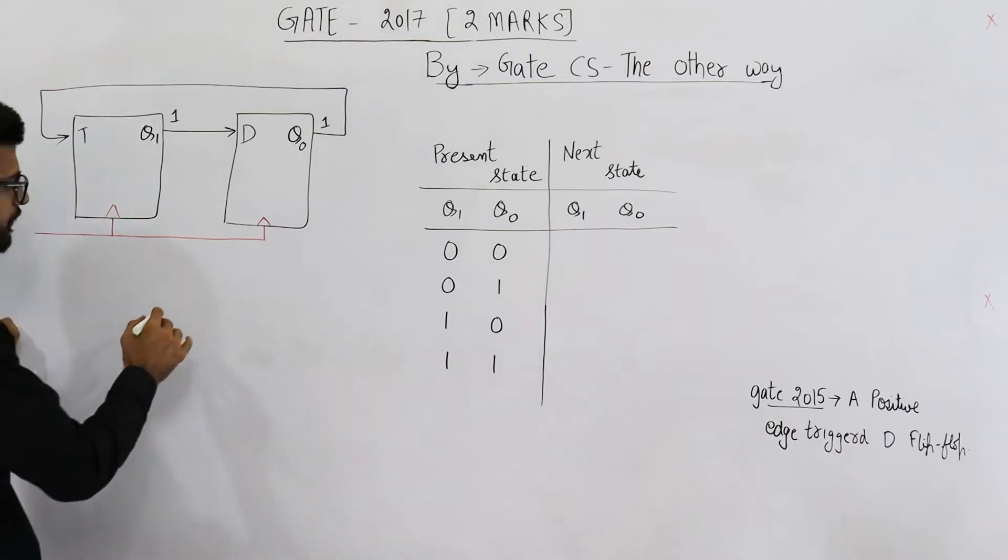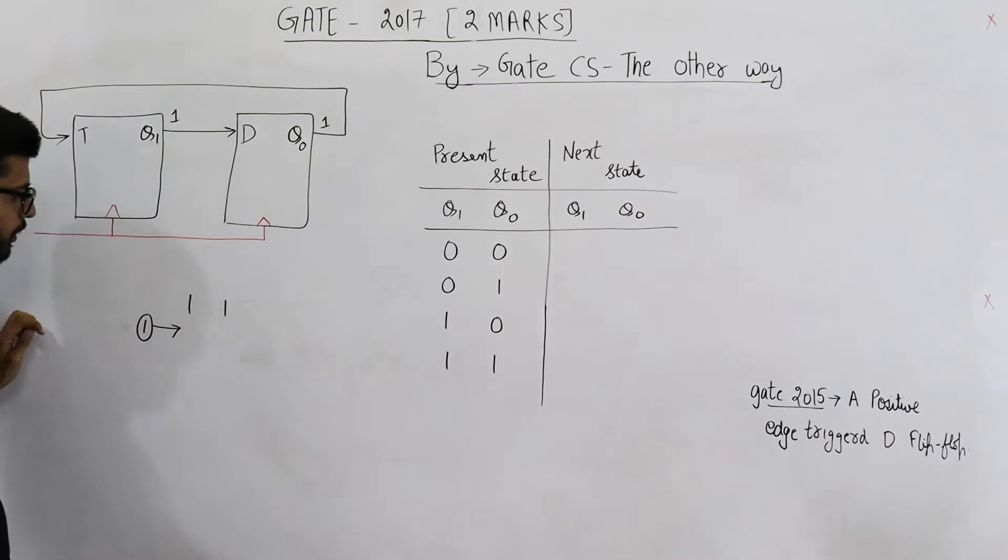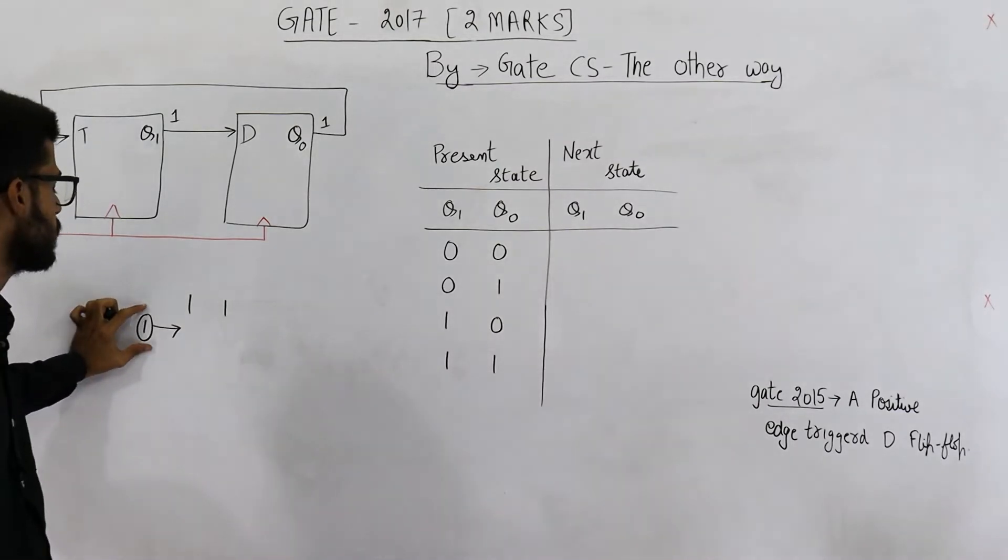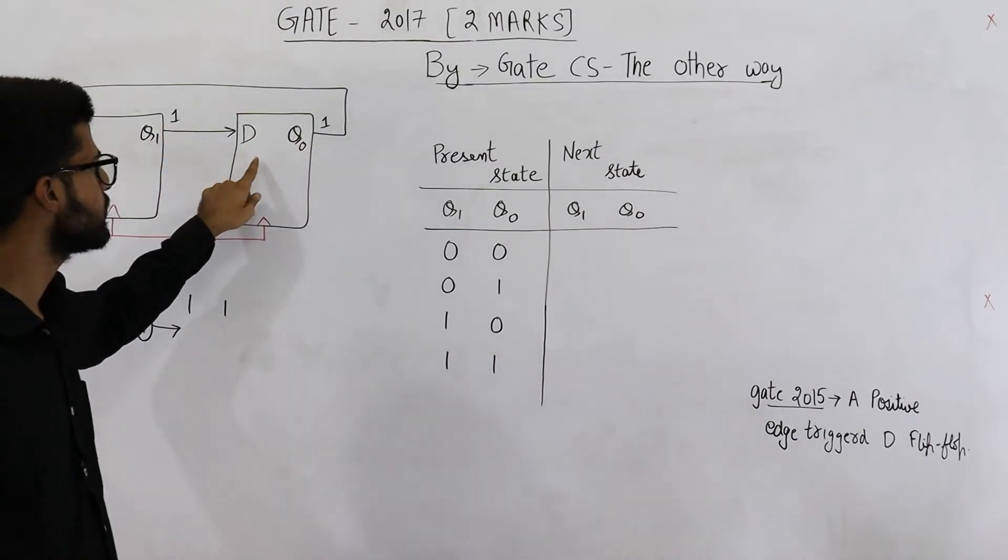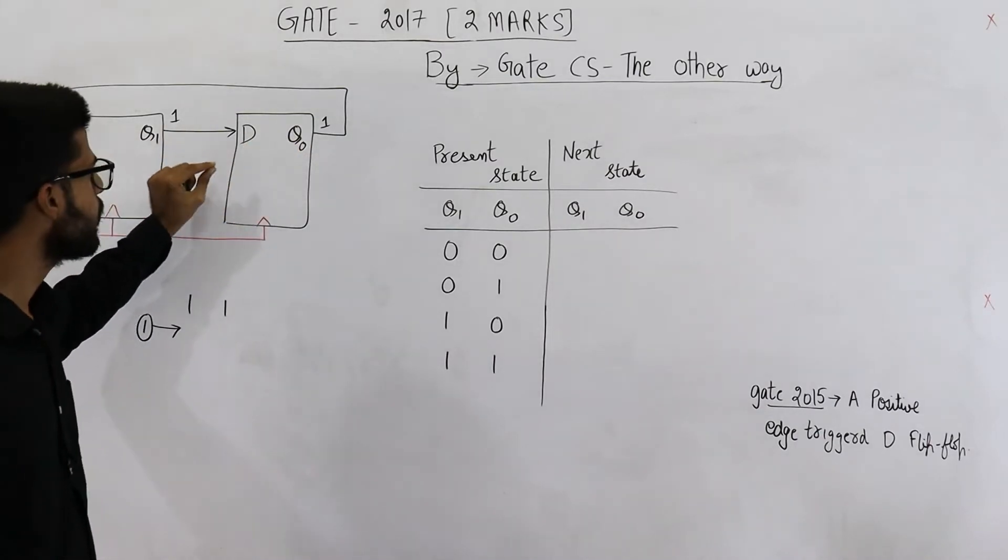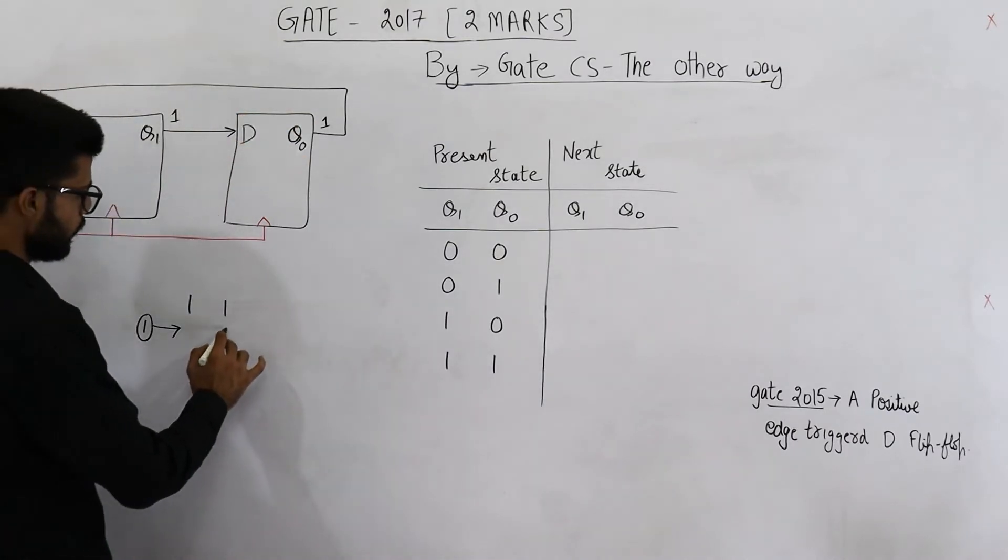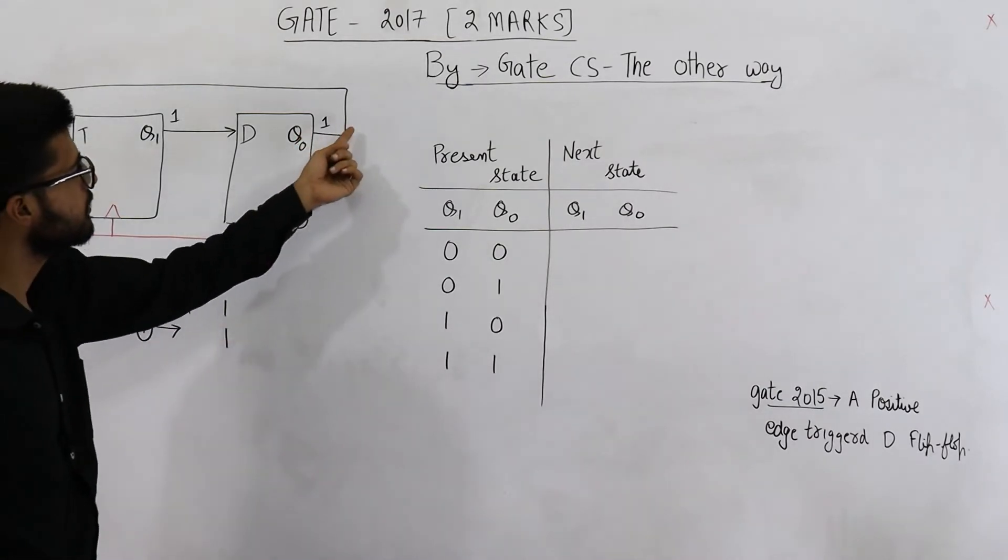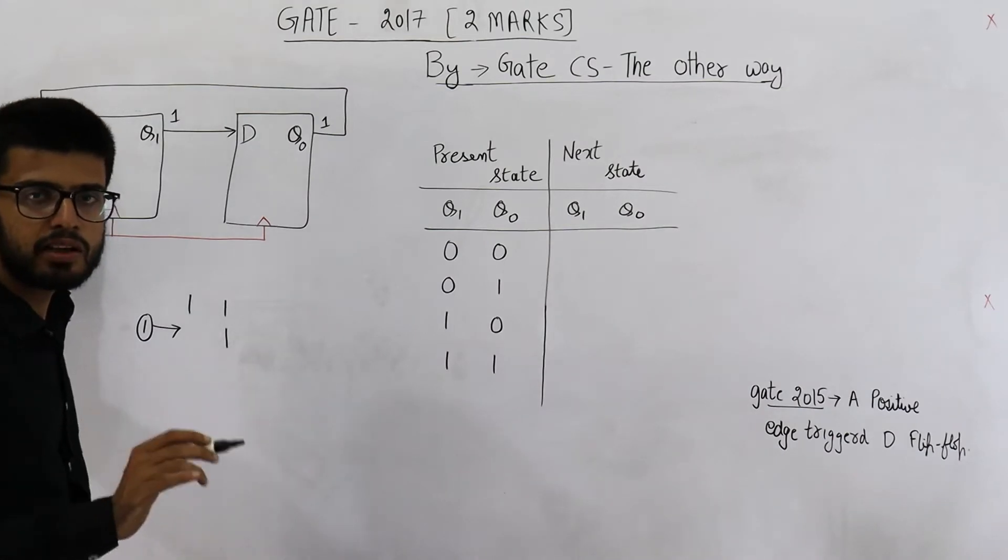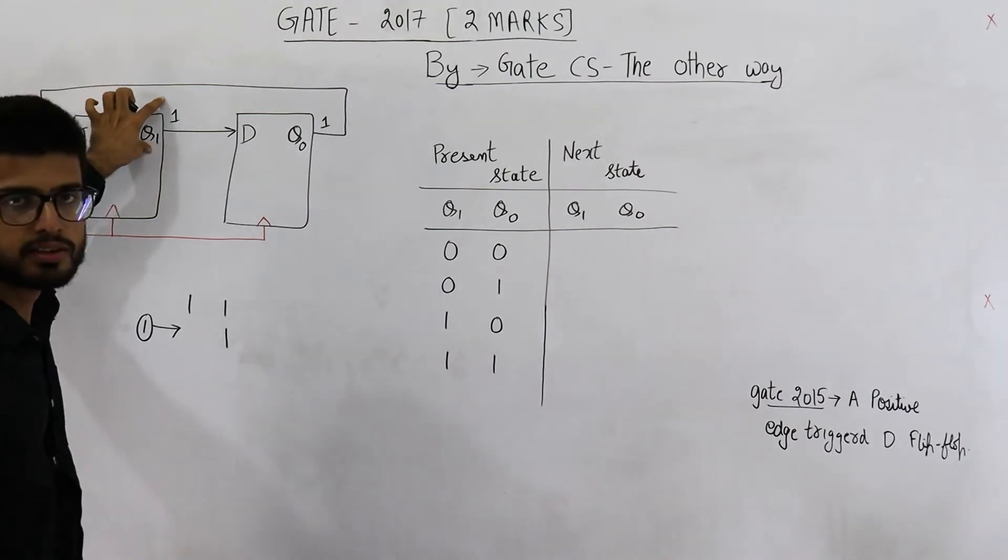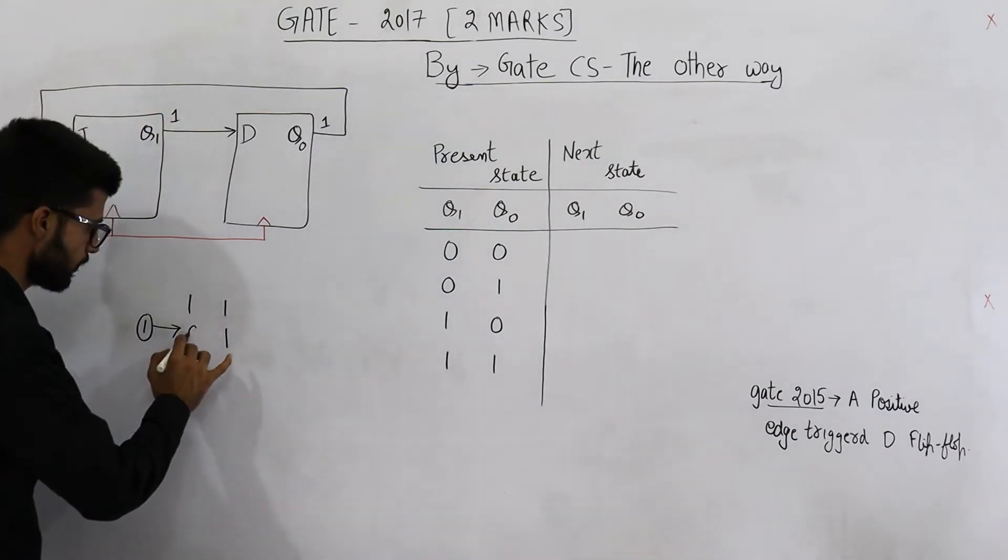Anyways, let's see if current state is 11, what will happen after giving the first clock. If we give the first clock, then whatever is this output Q1 will shift here because this is a D flip-flop. It is the property of D flip-flop that whatever is input will move here. So Q1 will be copied as it is here. Now see, this is high, that means input T is high. Whenever T is high, we will toggle this current state. Current state of Q1 is 1. Upon toggling, it will become 0 like this.